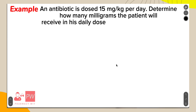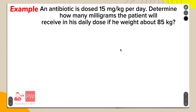Let's understand this with an example. An antibiotic is dosed at 15 mg per kg per day. Determine how many milligrams the patient will receive in his daily dose if he weighs about 85 kg. The patient's weight is 85 kg and the antibiotic dose is 15 mg per kg per day.